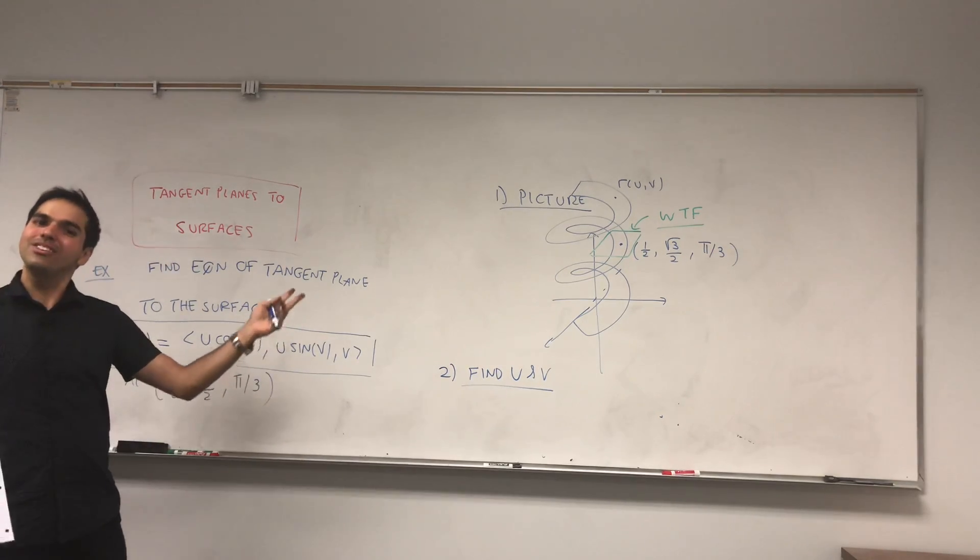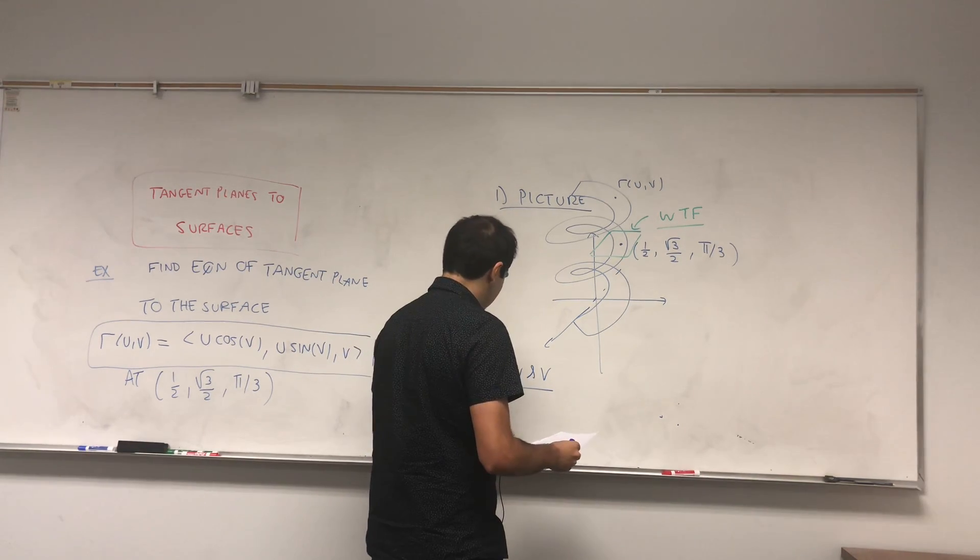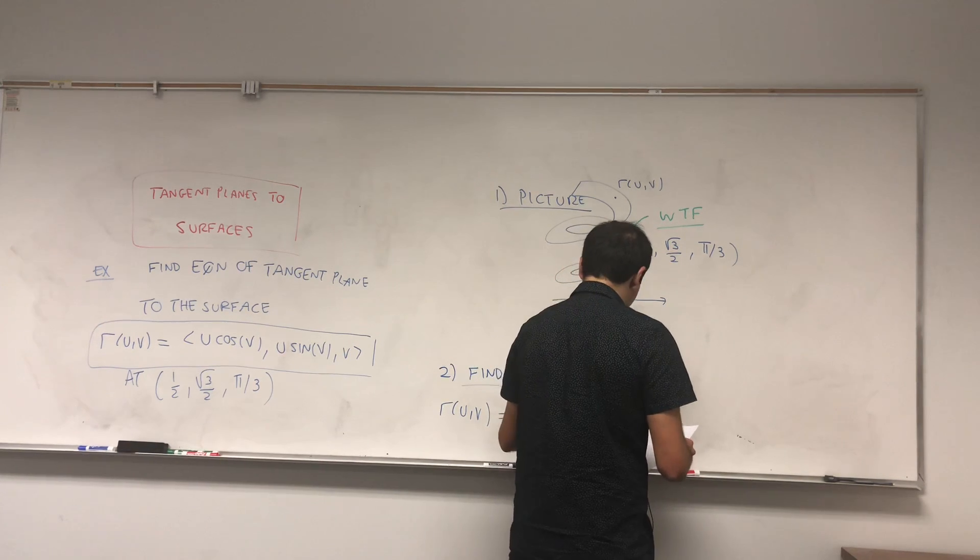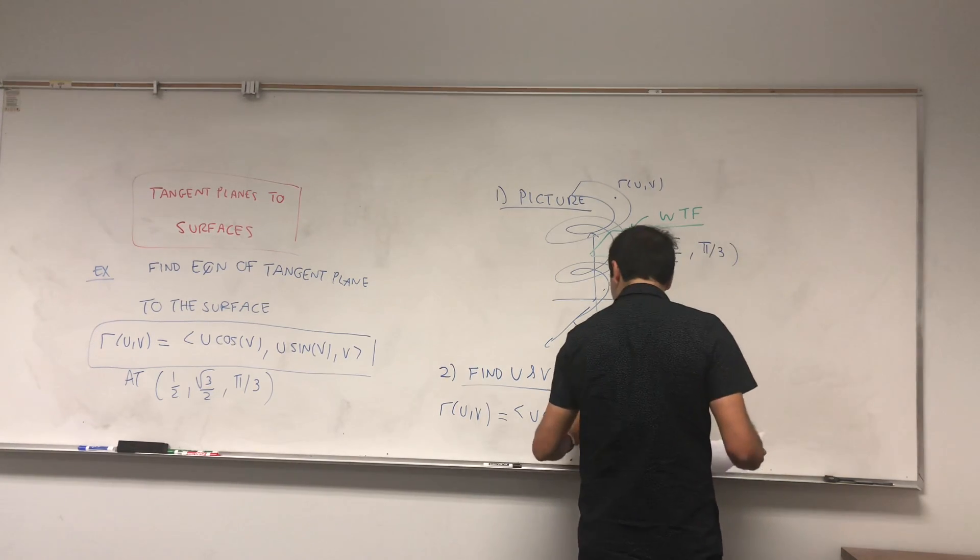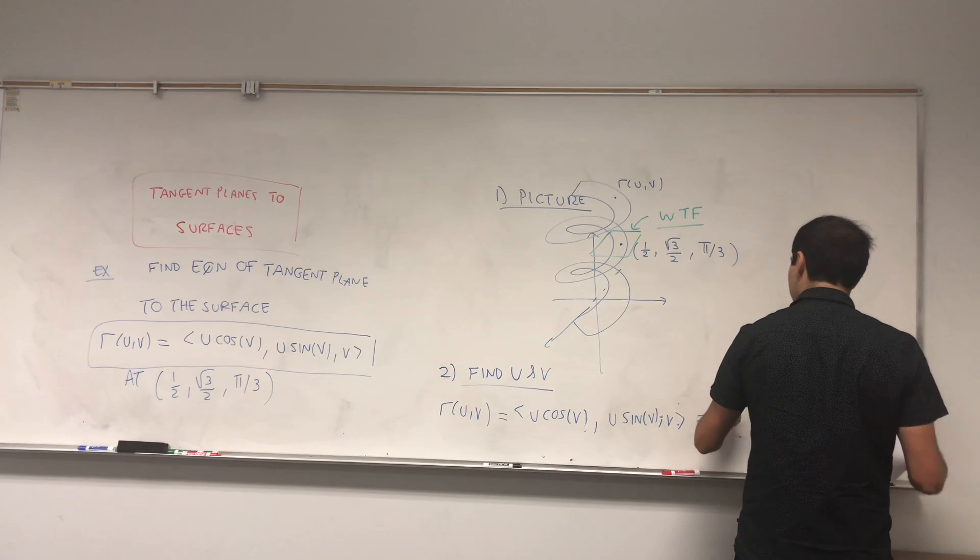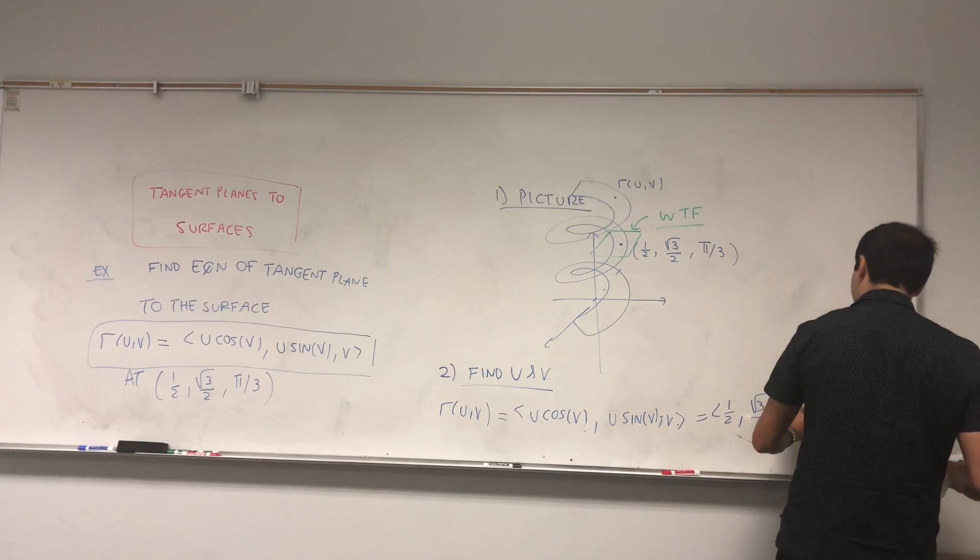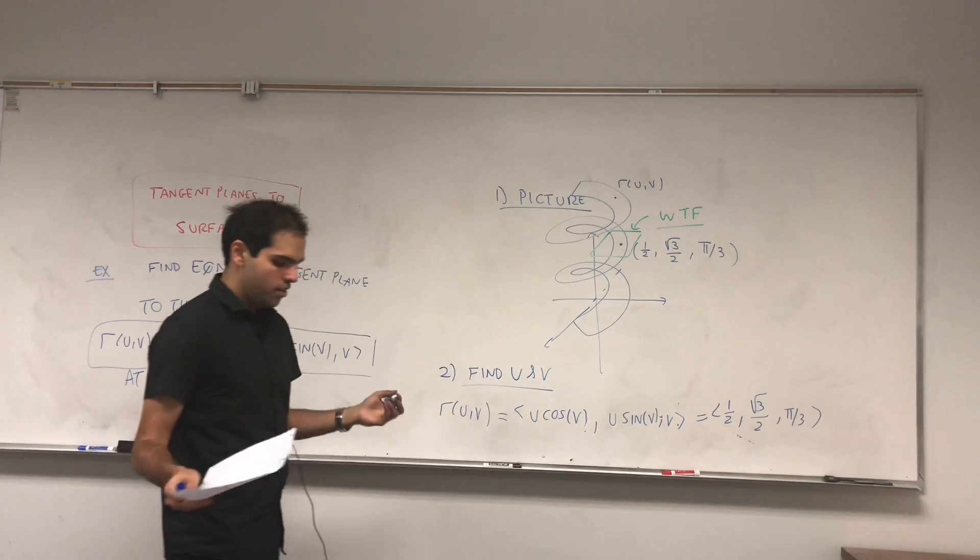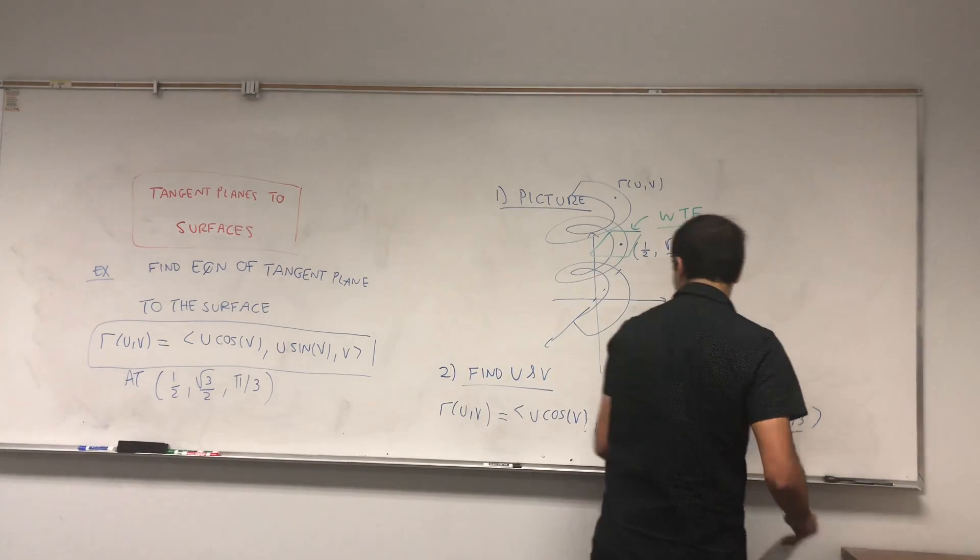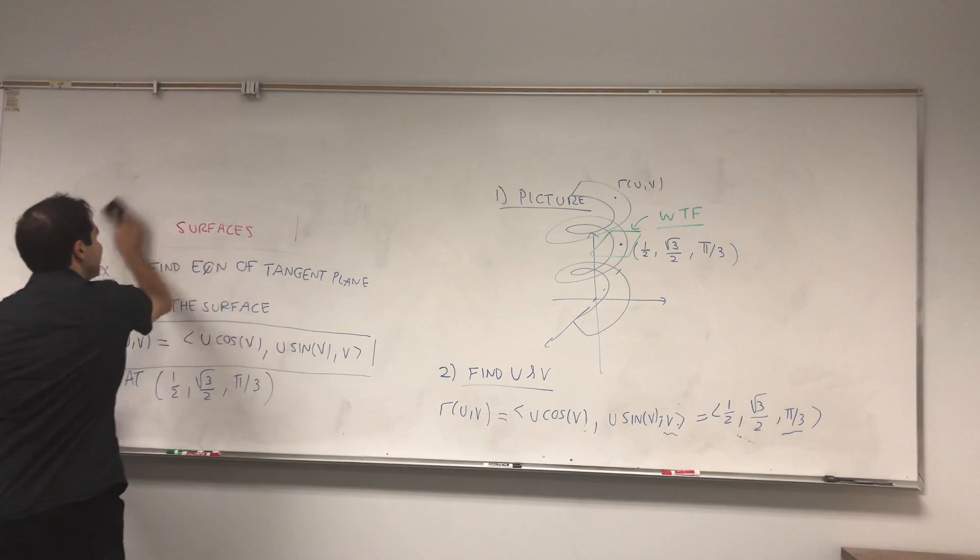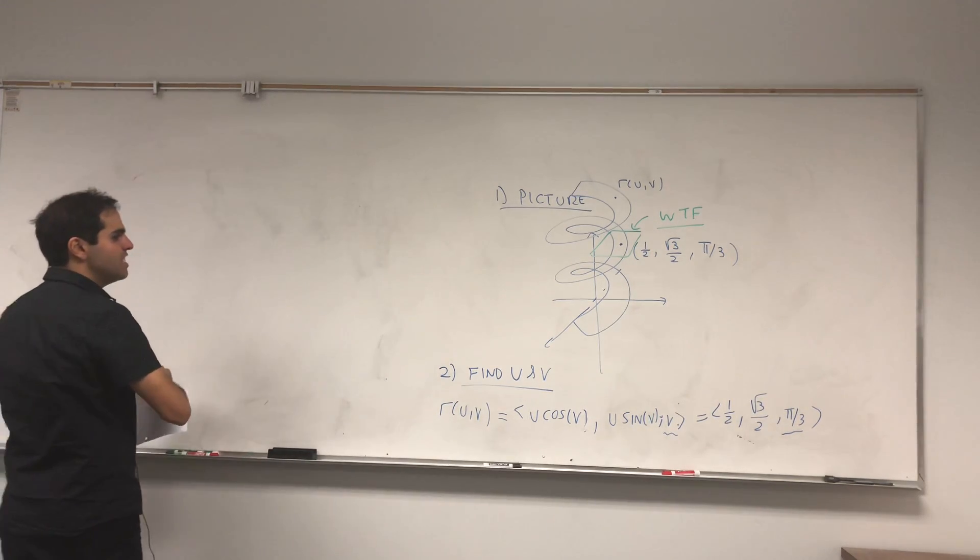So, it's like finding Nemo, but you have to find two fishes or something. So, what do we get? R(u,v) equals to u cosine v, u sine v, and v. And we know this equals to one-half, point or vector, doesn't matter, square root of three over two and pi over three. Now, one of the equations is easy to find because we basically have v is pi over three. So, how nice. So, v is pi over three.